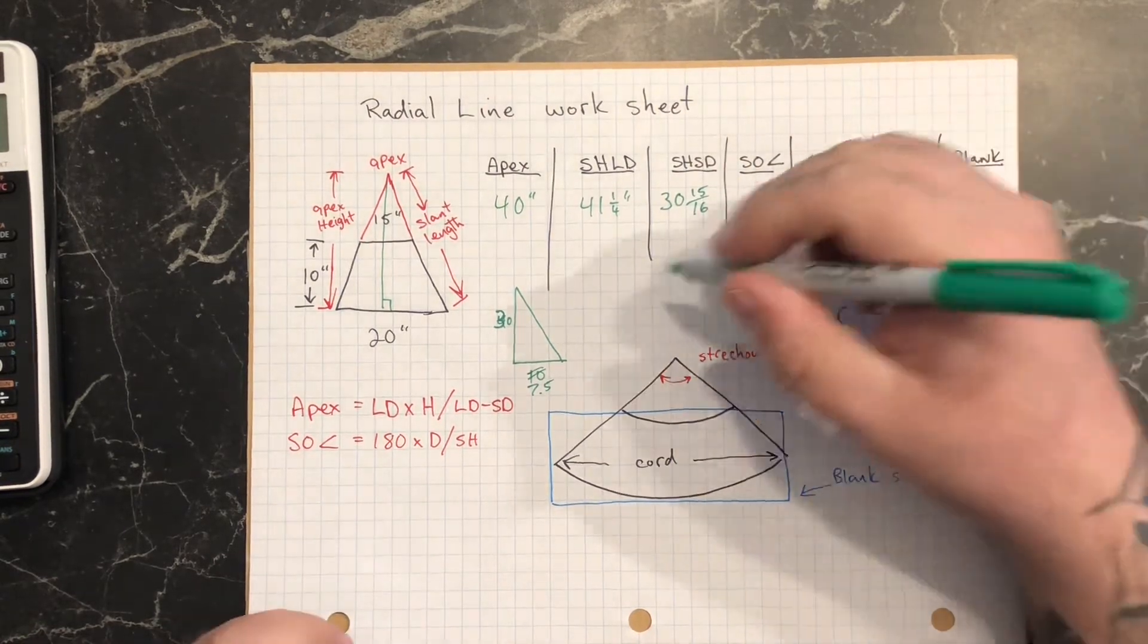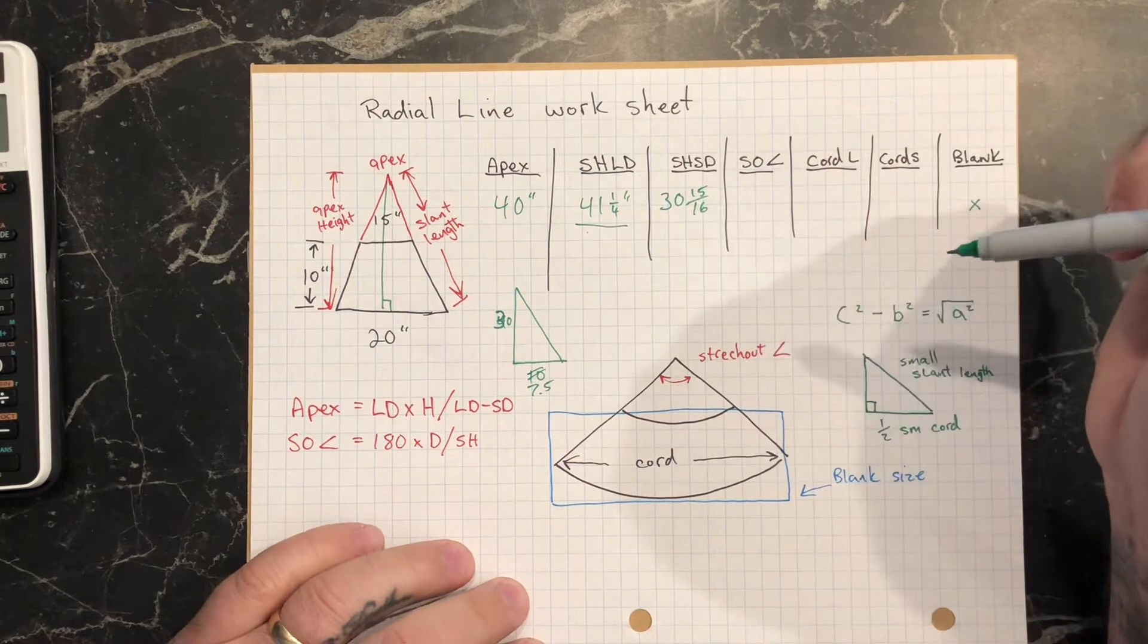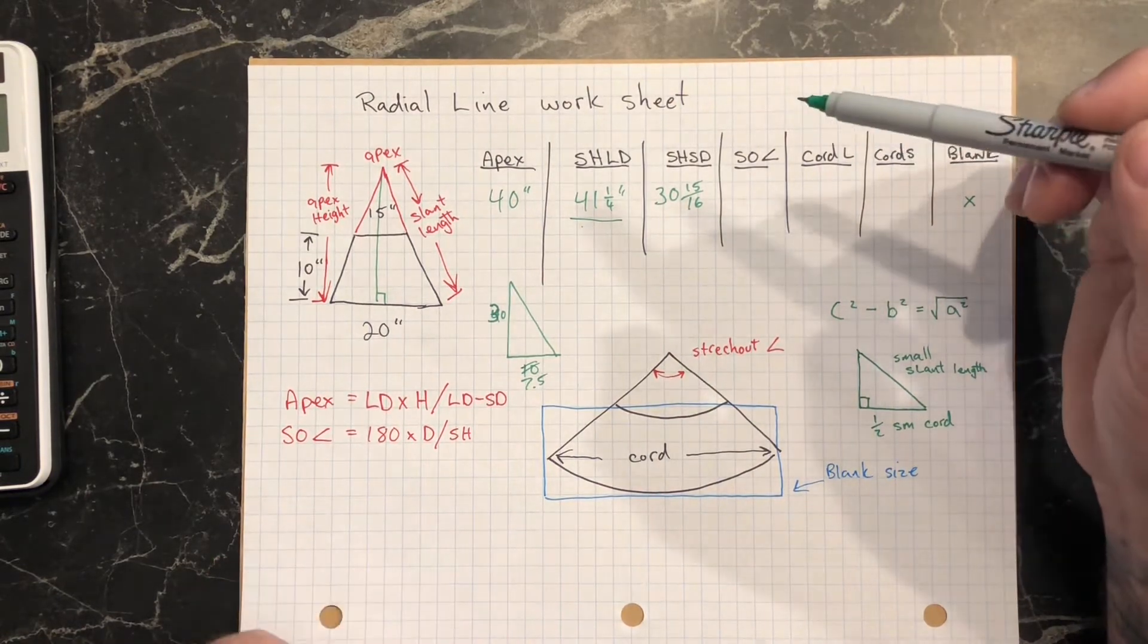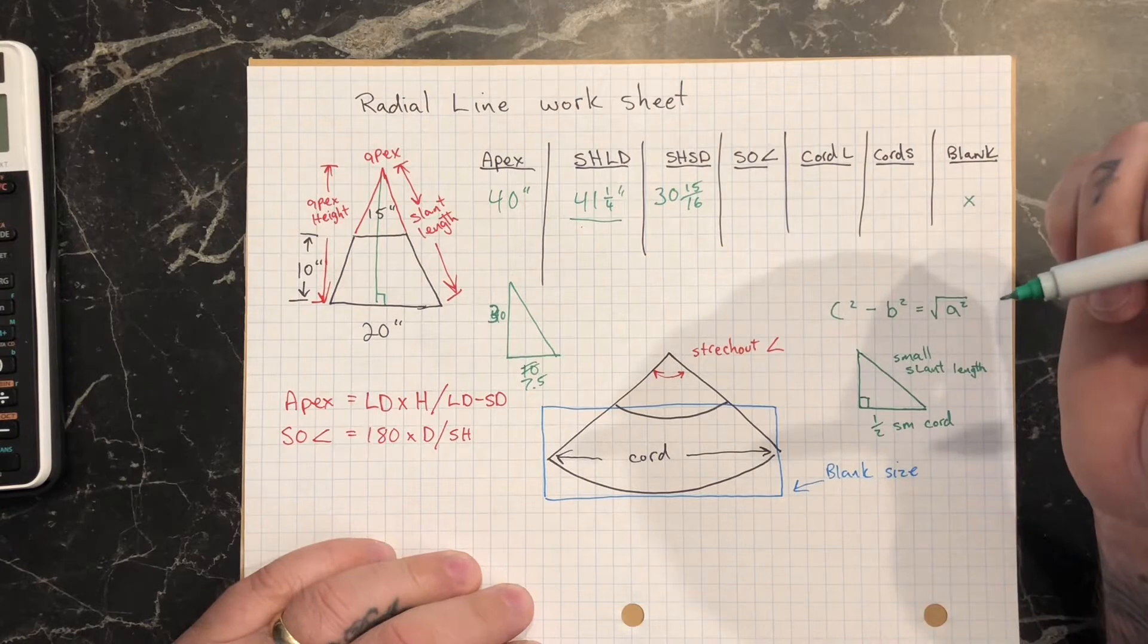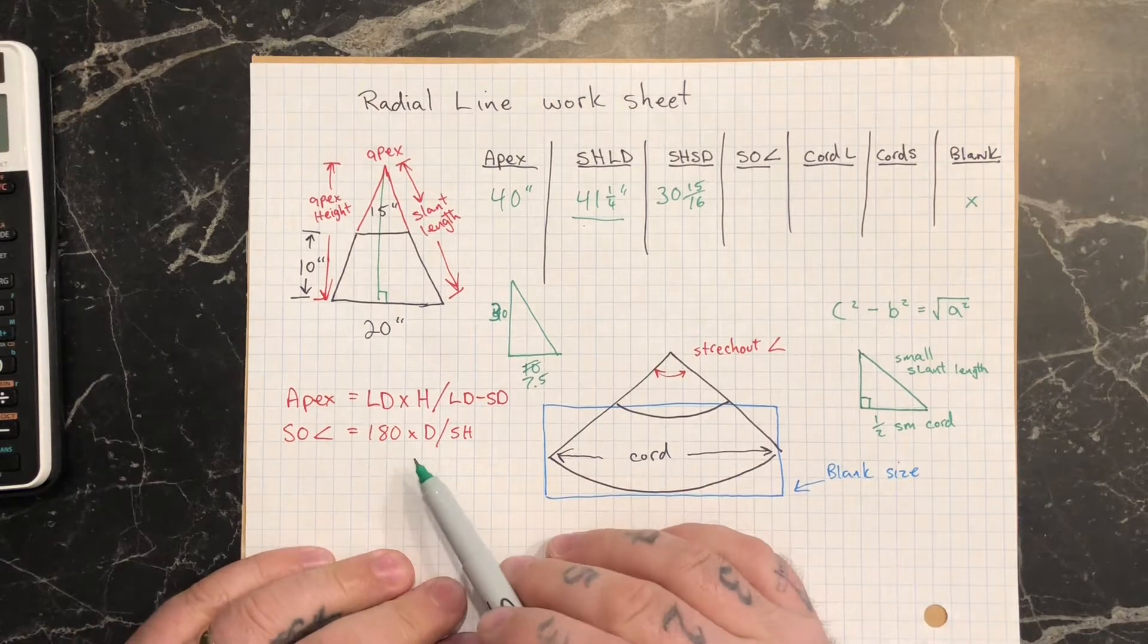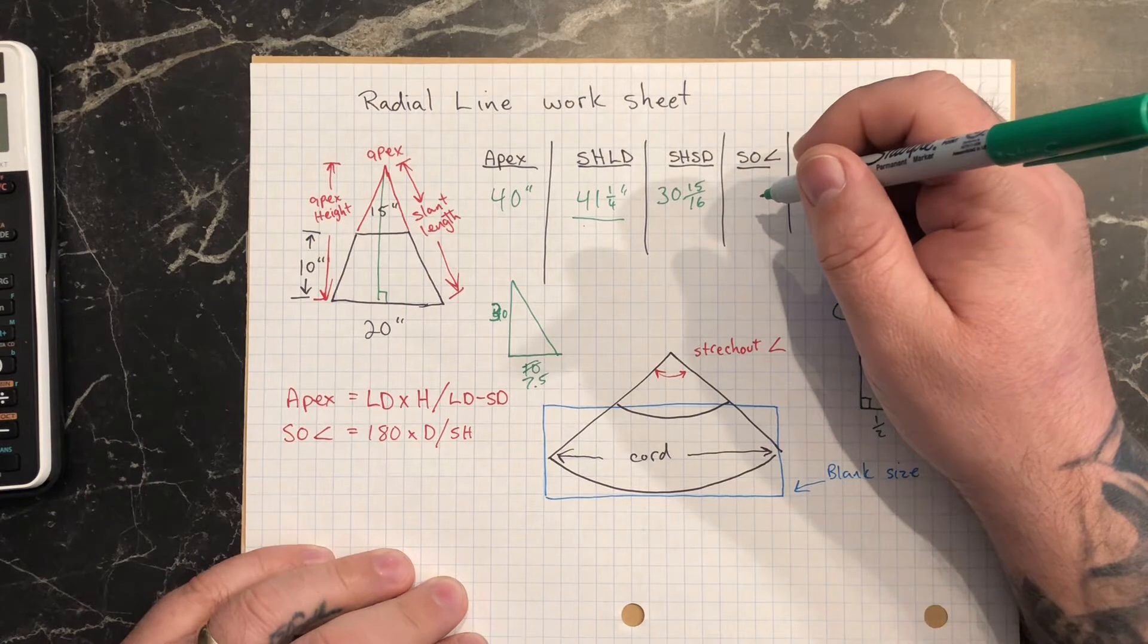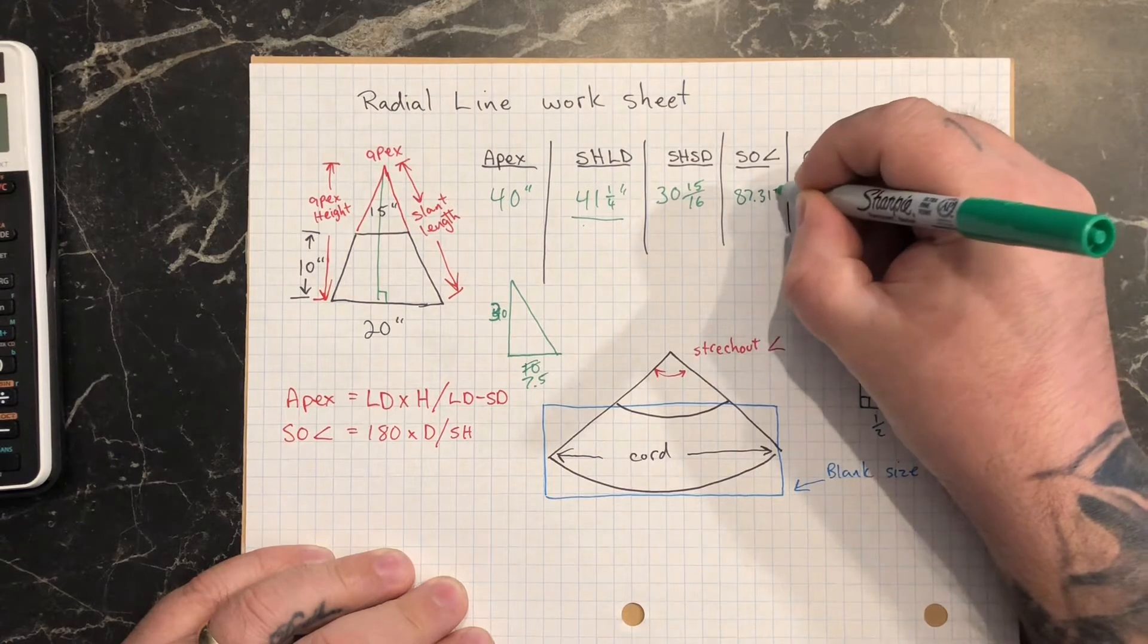Okay, now we have those slant heights. This is the most important slant height that we're using for these math equations. This one does play into helping us find the blank size. So stretch out angle, that's where we use the other formula here. Stretch out angle is 180 times the large diameter divided by the slant height. 180 times 20 divided by 41 and a quarter. That will give us a stretch out angle of 87.313 degrees.